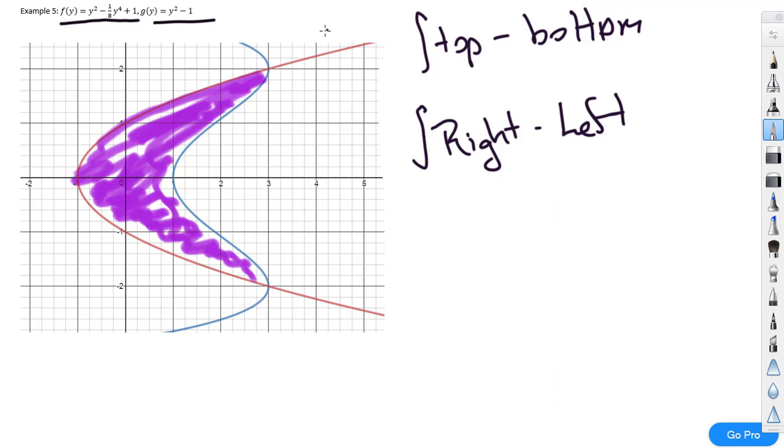If we look at this function, this is my right-hand function, and this is the function to the left of the area. So, this red one, this red line here, that's y² - 1. And then this one over here, that's the other one. So, what we are going to have is the integral of the right-hand function, which is going to be y² - 1/8 y⁴ + 1, minus the left-hand function, which is y² - 1.